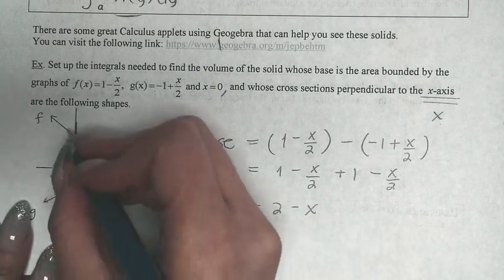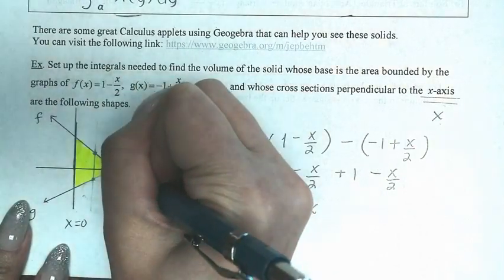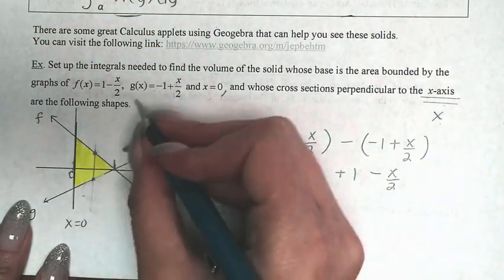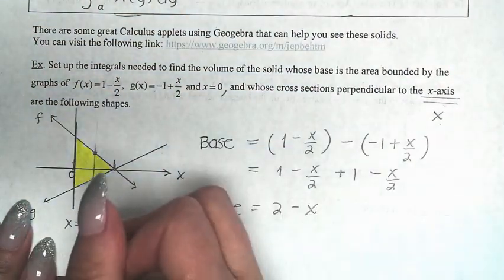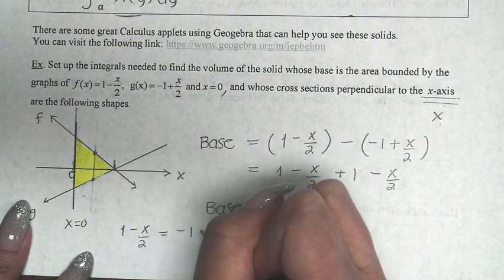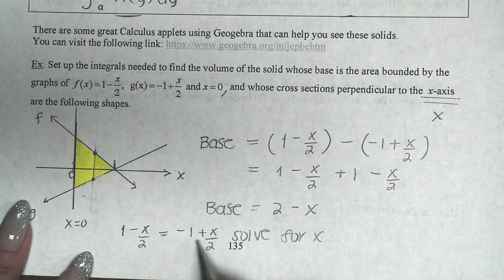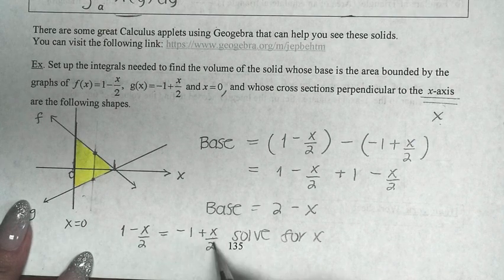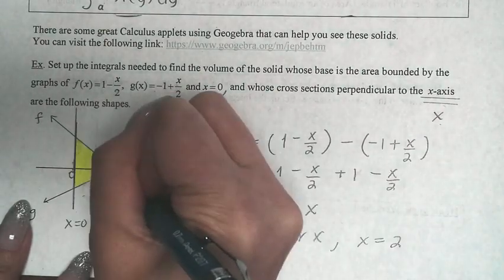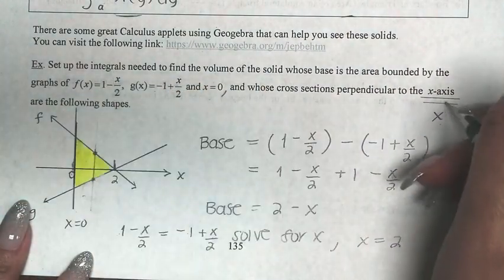The limits of integration, since we're working with x's, go from x = 0 to whatever the intersection point is. To find the intersection, we set the two functions equal and solve for x, and we get x = 2. So the integral will be from 0 to 2.